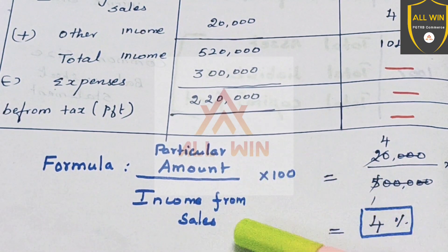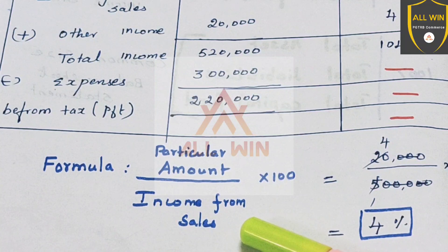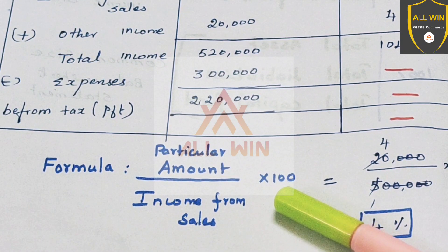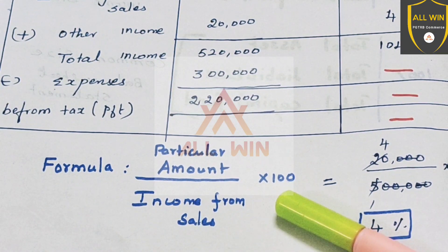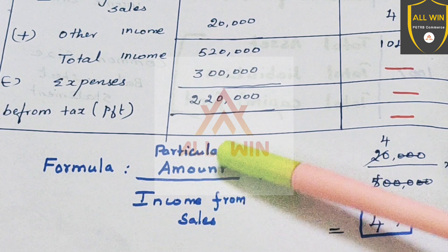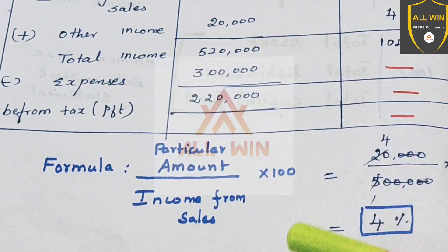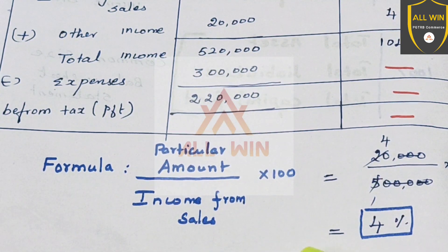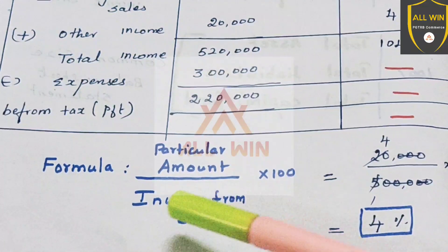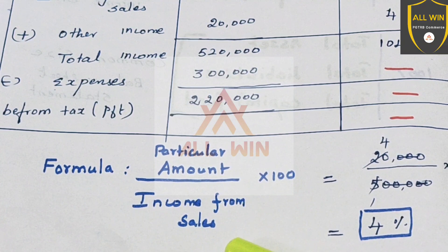The formula is: particular amount divided by income from sale, multiplied by 100. The particular amount is whichever figure you want to express as a percentage, divided by income from sale.